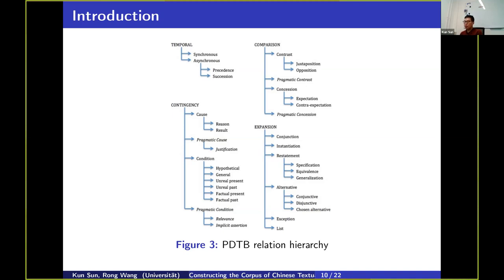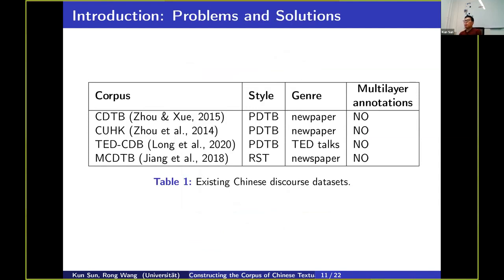Let us consider how we merge two approaches from PDTB and RST to annotate Chinese discourse. Because of the great influence of RST and PDTB, their methods have been used to annotate different languages, including Chinese. Currently there are some valuable Chinese discourse corpora. However, they have shortcomings: they are annotated in only one single genre, and annotators did not annotate discourse from different perspectives — that is, they ignore multi-layer annotations.